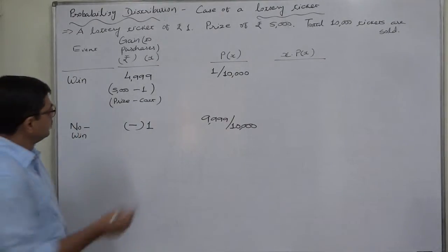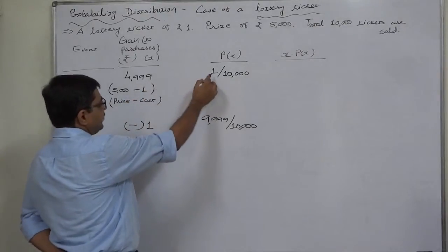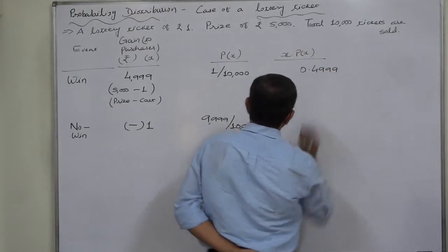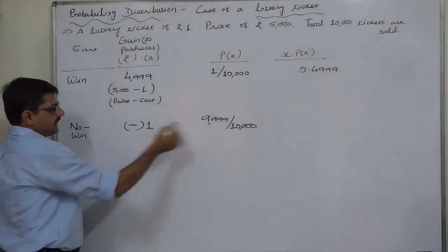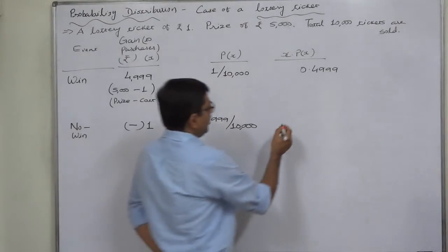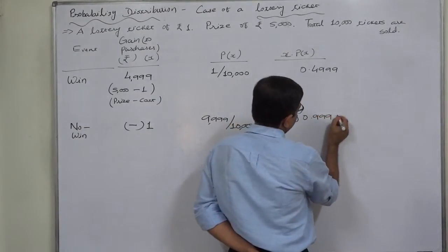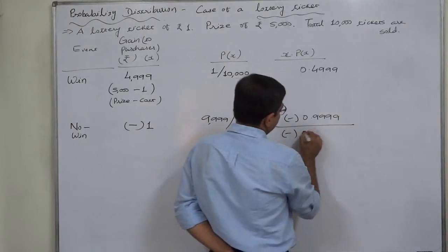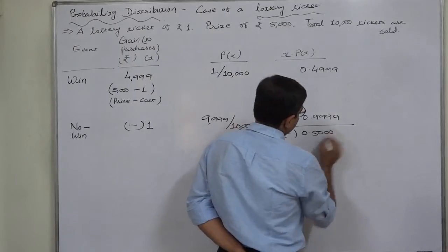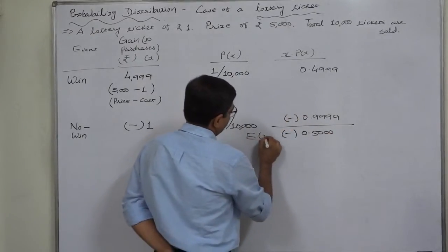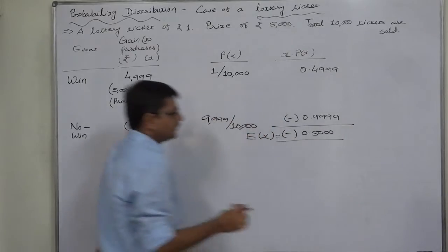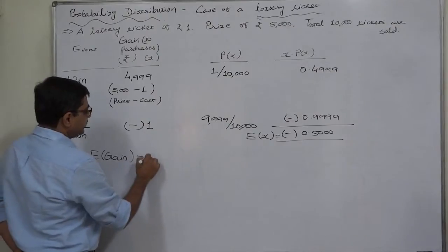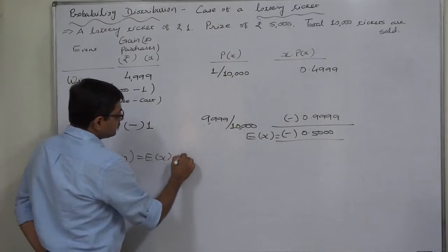So ultimately, 4,999 into 1 by 10,000, so it comes to 0.4999 positive. But in this case, X into P of X is minus 0.9999. So ultimately, the expectation is minus 0.5. That means the expected gain of the purchaser of the ticket is minus 0.5.